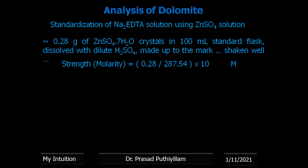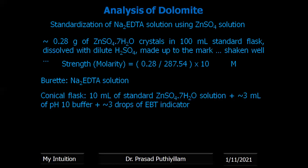Its strength in molarity is calculated as mass divided by molecular mass. 0.28 is the weight of zinc sulfate taken; 287.54 is the molecular mass of zinc sulfate. Since we prepared only 100 ml (not one liter), a multiplication factor of 10 is applied. In the burette, we take the disodium salt of EDTA. In a conical flask, 10 ml of standard zinc sulfate solution is taken. Approximately 3 ml of pH 10 buffer (ammonium hydroxide–ammonium chloride buffer) is added.